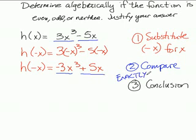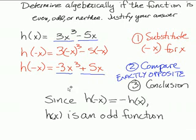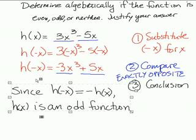Now since all terms are exactly opposite in sign, then I'm going to have an odd function. So when I go to write my conclusion, I'm going to say since h of negative x equals the opposite of h of x, h of x is an odd function.